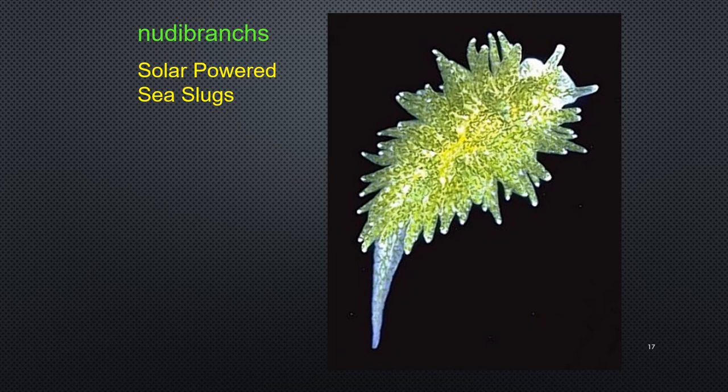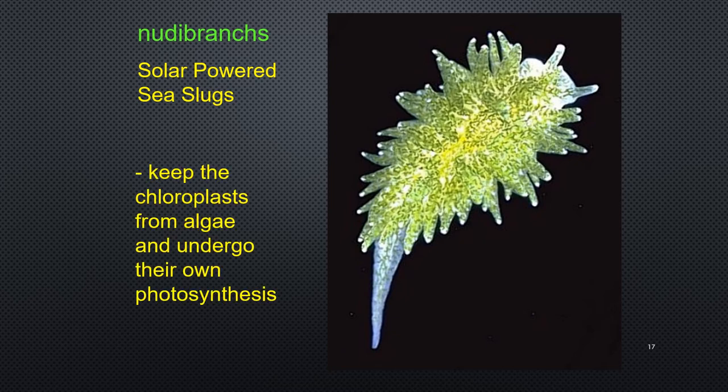A unique feature worth pointing out are the nudibranches — they are sea slugs that are solar powered. What they do is eat green algae and keep the chloroplasts, which allows them to undergo their own photosynthesis. Having said that, they don't pass that along to the next generation — new baby nudibranches have to eat green algae again to obtain the chloroplasts. A student once noted this seems to contradict our endosymbiotic theory, where organisms would ingest chloroplasts and pass them to the next generation — something interesting to think about.